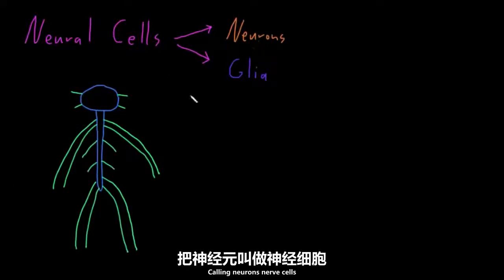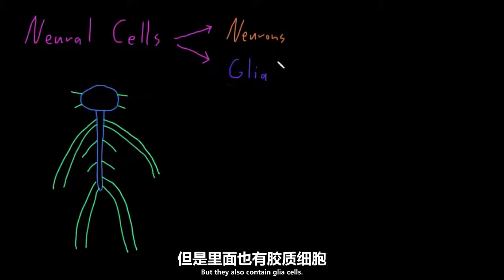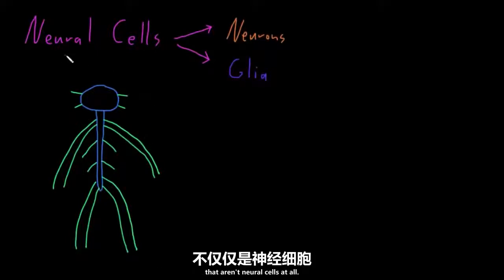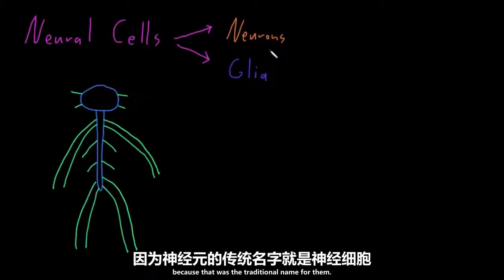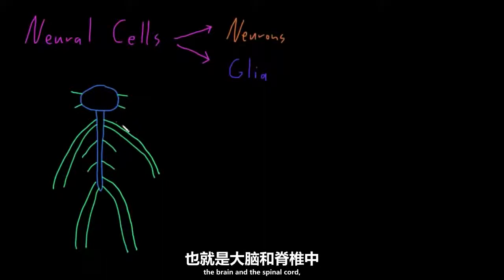Calling neurons nerve cells is a little problematic, because the structures in the peripheral nervous system called nerves are made up of neurons, but they also contain glial cells and a number of other cells that aren't neural cells at all. However, you'll often hear people refer to neurons as nerve cells, because that was the traditional name for them. Neurons are found both in the central nervous system and in the peripheral nervous system.